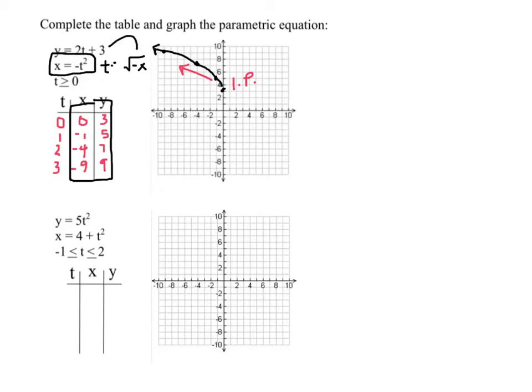And then I can just substitute that in for t in the y equation. So I'd end up with y equals 2 multiplied by the square root of negative x plus 3. And this would be my Cartesian equation.